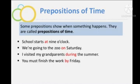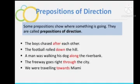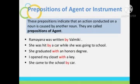Some prepositions show where something is going and they are called prepositions of direction — they indicate the direction of an event or a noun or pronoun. For example: 'The boy chased after each other,' 'The football rolled down the hill,' 'The man was walking his dog along the river bank.' In all these sentences we can see the direction. Also, 'We were traveling towards Miami' — 'towards' is a preposition of direction.